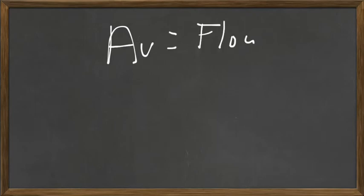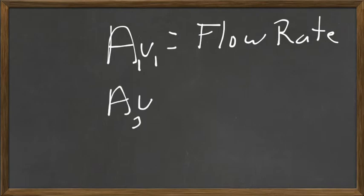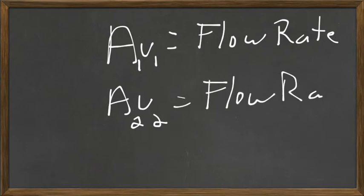And if they give you flow rate and these guys, you might be really golden. Because A times V is flow rate. And it, of course, is constant in the system.